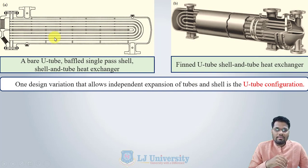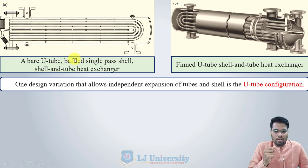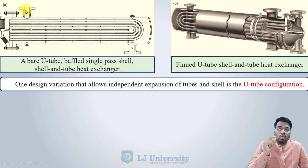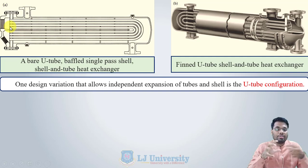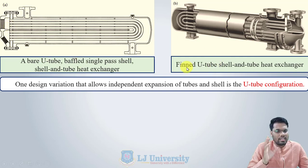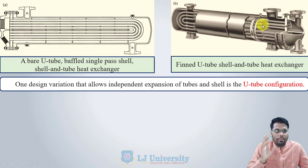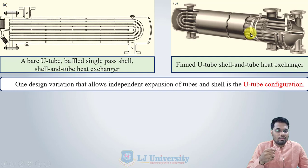The first type is a bare U-tube — 'bare' means there is no arrangement of extra surface or finned surface — in a single pass shell and tube heat exchanger. The U-tube starts and ends at the tube sheet, so only an even number of tubes are present. The second configuration is the same but with extended fin surfaces provided at the outer surface of the tube to enhance heat transfer.